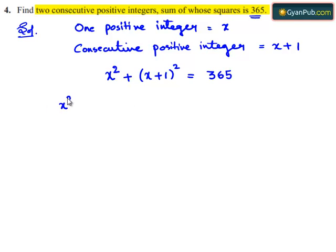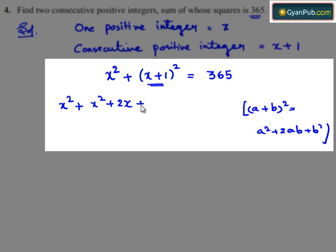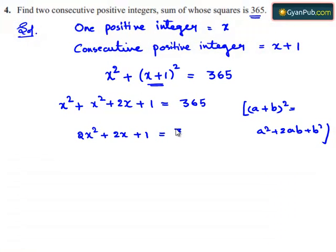So this can be written as x squared. And x plus 1 whole square can be expanded using the identity: a plus b whole square is equal to a squared plus 2ab plus b squared. By using this identity, we expand x plus 1 whole square and get x squared plus 2x plus 1, so x squared plus x squared plus 2x plus 1 is equal to 365.